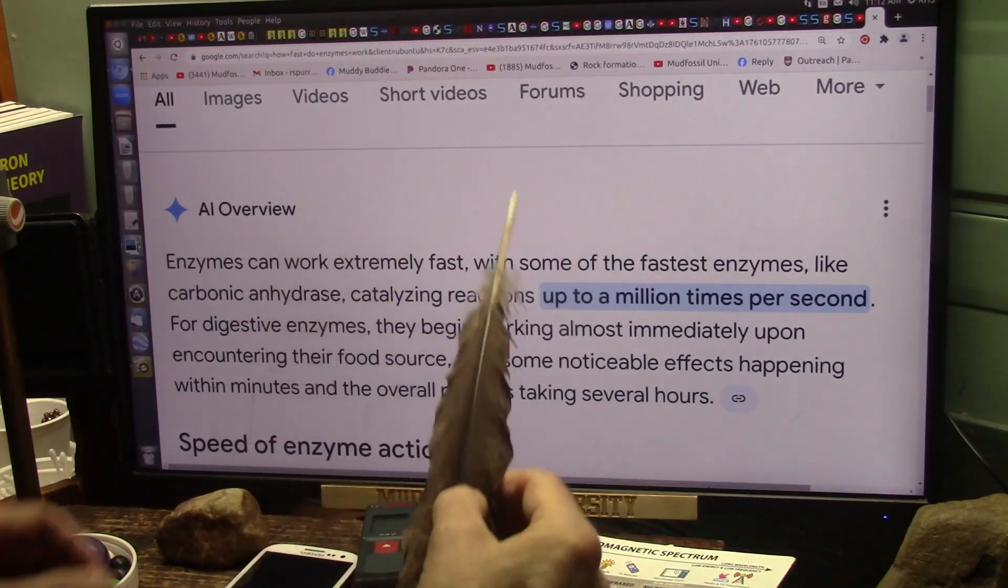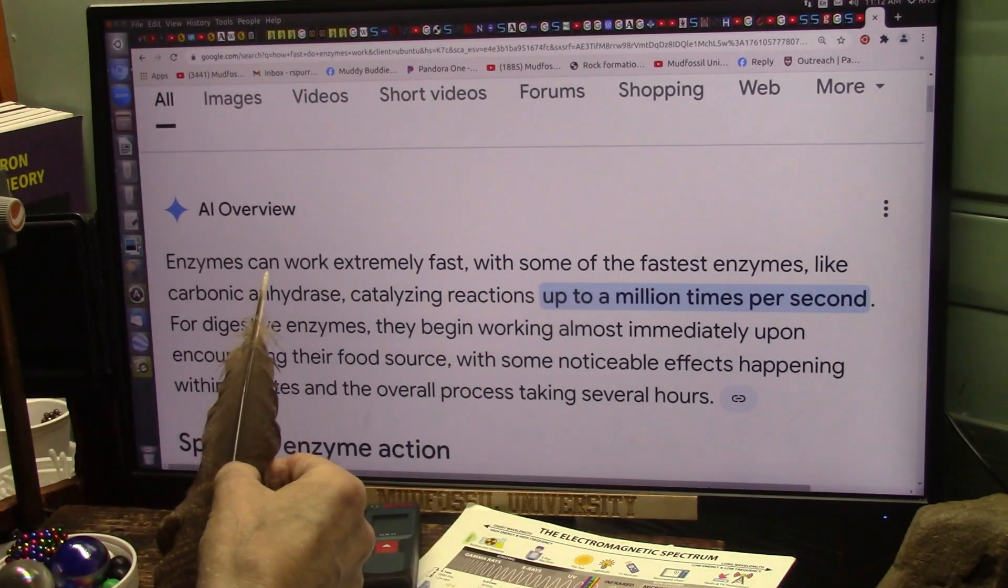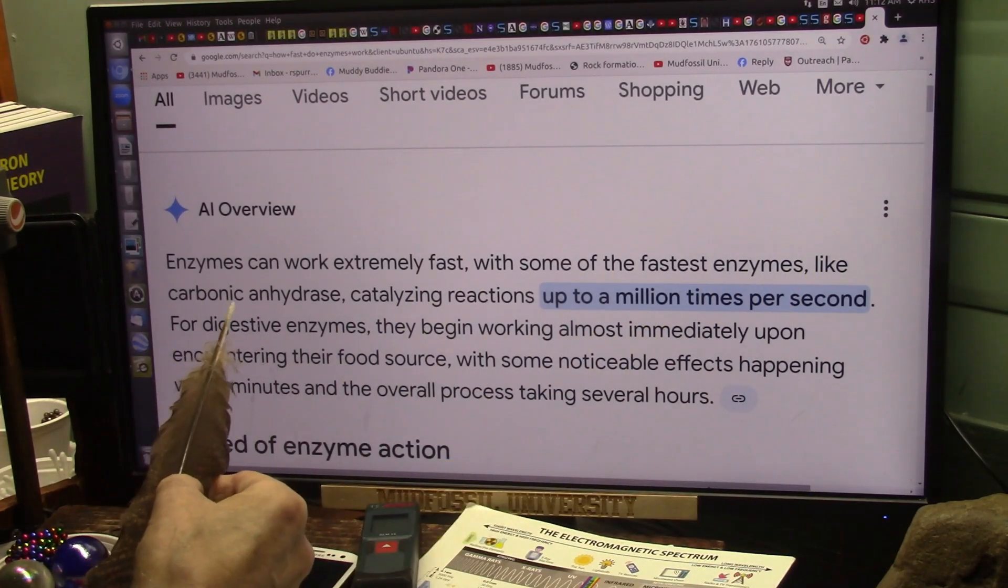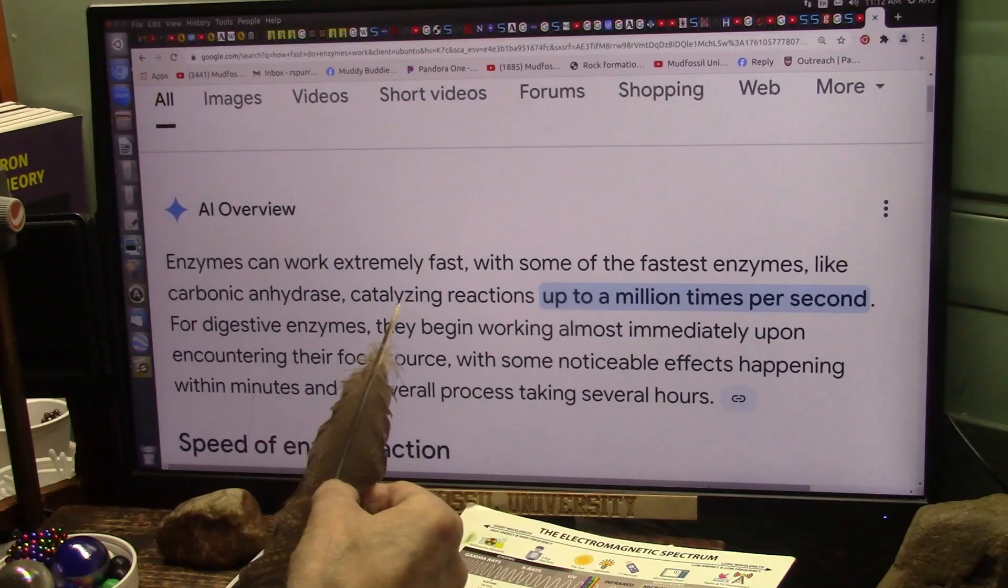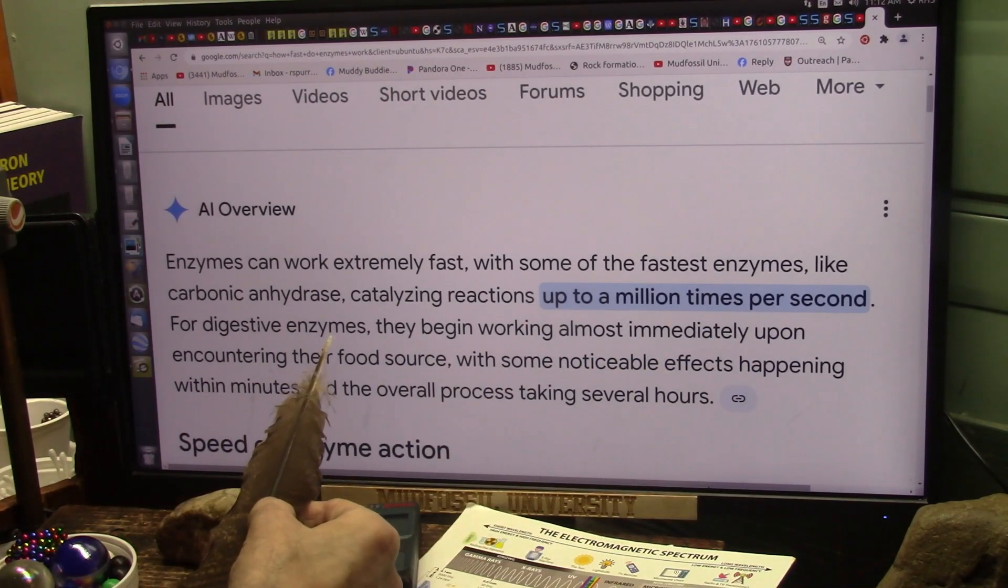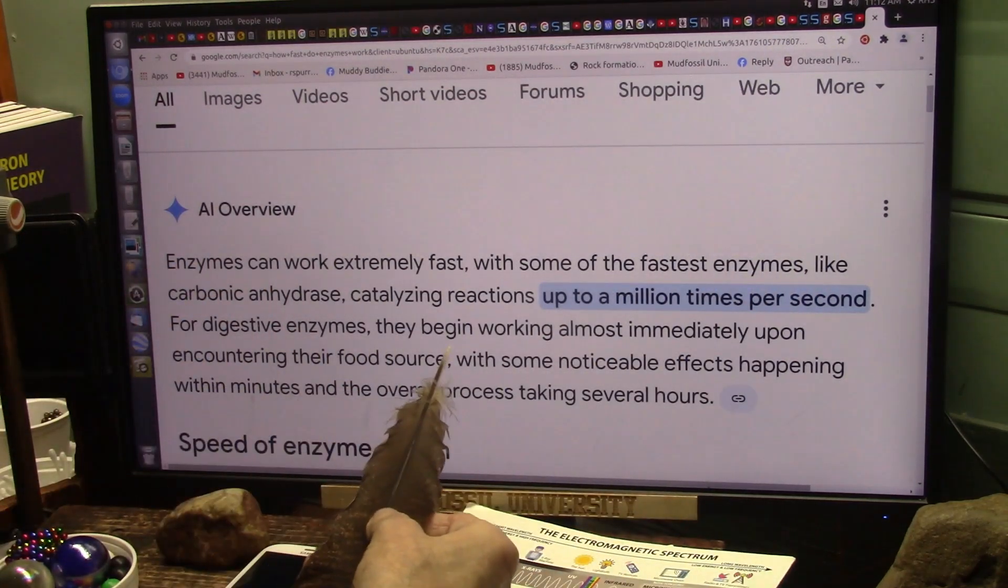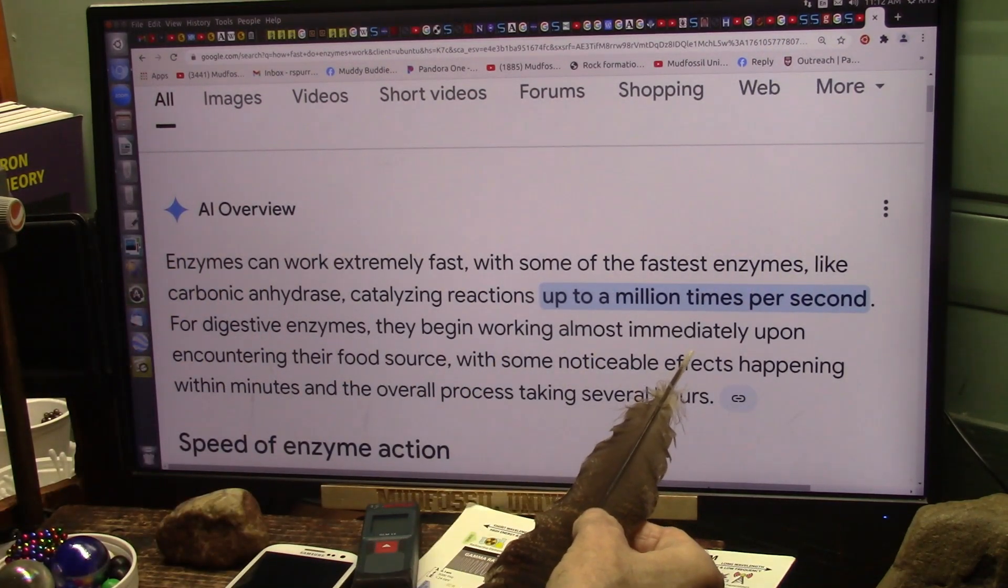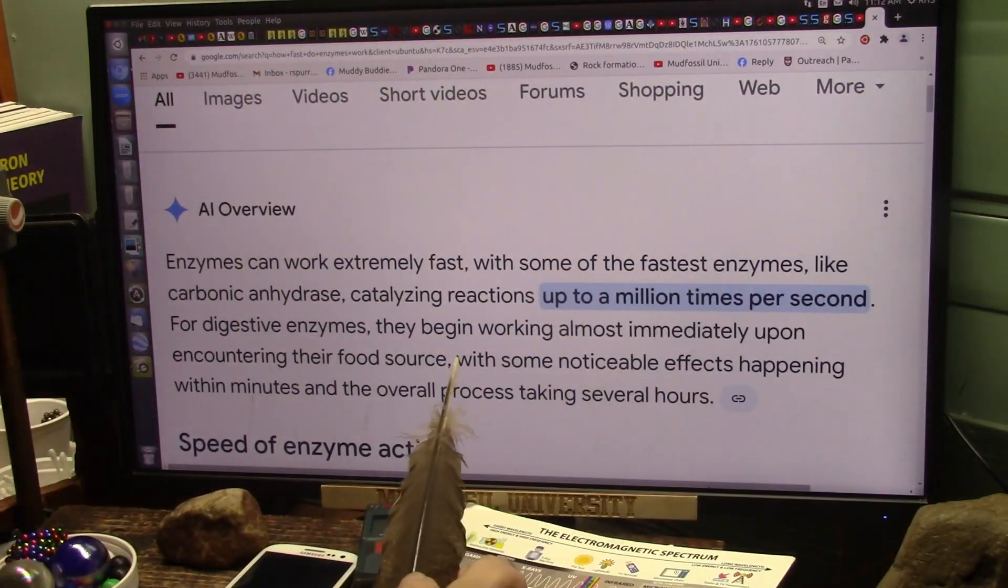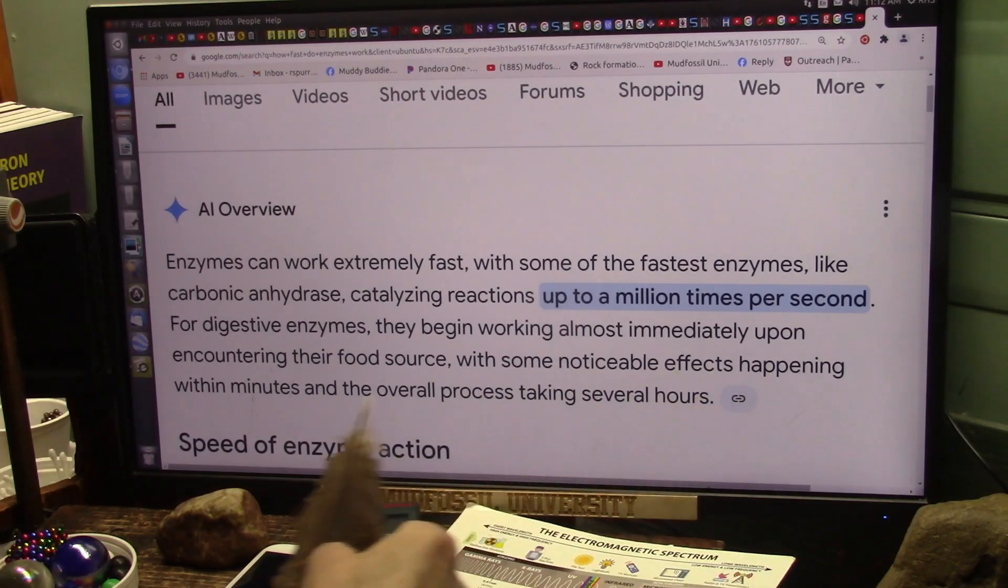This is really serious because we need to be able to use those little tiny bits to work with enzymes. Enzymes work extremely fast. Some of the fastest enzymes like carbonic anhydrase, catalyzing reactions up to a million times a second. For digestive enzymes, that's to digest your food. For digestive enzymes to begin working almost immediately upon encountering the food source. The food hits them, they break them, I mean just instantaneous, some noticeable effects happening within minutes.